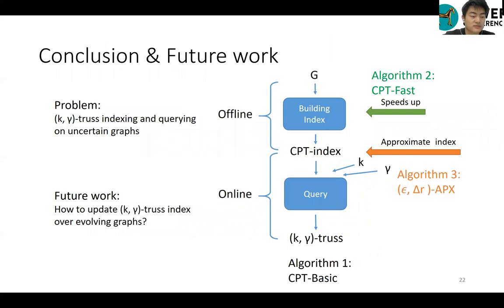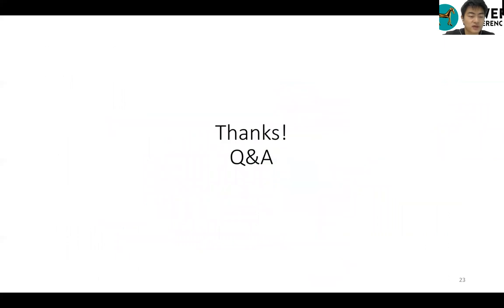Here we summarize our work. We study the problem of k-gamma-trust indexing and querying on uncertain graph. We propose a compact data structure of CPT index to keep the complete information of k-gamma-trust for all k and gamma. We propose two index construction algorithms, CPT-basic and CPT-fast. We also propose an approximate indexing scheme to trade off the index construction and online retrieval processes. Since it takes a long time to build the index from scratch, it's worthwhile to study the maintenance of probabilistic trustness in the future. Thank you for listening.